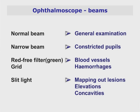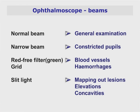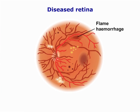A filter disc is usually situated on the rear face. The normal white beam is used for general examination purposes. A narrow beam can be used for examining the optic disc or if the pupils are very constricted. There is also a green light, or as it should be referred to, a red-free filter. It enhances blood vessels and hemorrhages and helps to differentiate black pigmentation from hemorrhages. There is also a grid which is used for mapping out the position of any lesion.